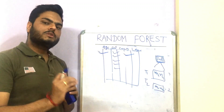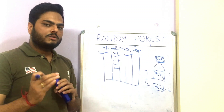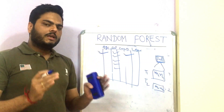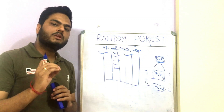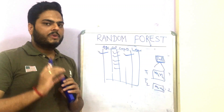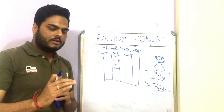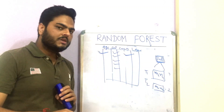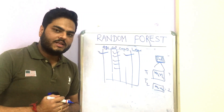So that covers how random forest works internally, how prediction happens, and the advantages and disadvantages of random forest. In my next video, I will show you the practical implementation in Python — how to choose the optimal number of trees, optimal M and N, and how to arrive at the best model. If you have any doubts, let me know through comments. See you in the next video!